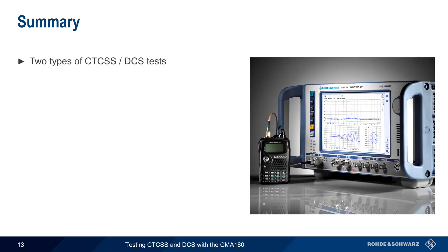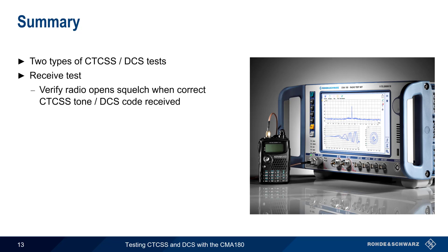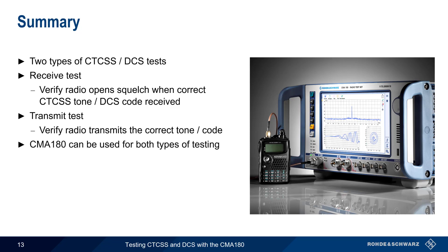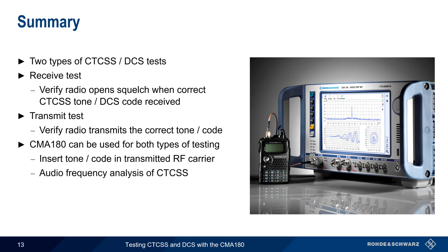In summary, there are two types of CTCSS or DCS tests. The first is a receive test, where we verify that a radio opens squelch when the correct CTCSS tone or DCS code is received. The second is a transmit test, where the radio frequency signal received from the radio is analyzed to check for the inserted tone or code. The CMA180 can be used for both types of testing. CTCSS transmit testing involves an audio frequency analysis to detect and measure the received analog tone, whereas DCS transmit testing performs a digital demodulation of the received FSK data.